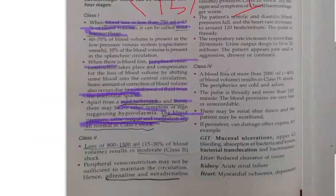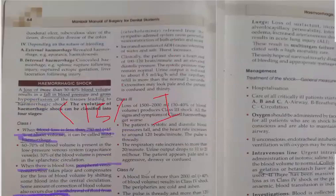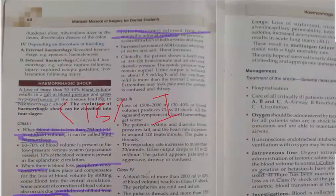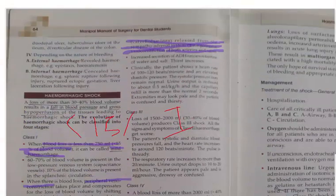Class 2 shock involves blood loss of 15 to 30% of blood volume, that is 800 to 1500 ml, and is classified as moderate shock. Here, peripheral vasoconstriction may not be sufficient to maintain circulation. Therefore, adrenaline and noradrenaline — catecholamines released from the sympathoadrenal system — cause powerful vasoconstriction of both arteries and veins.